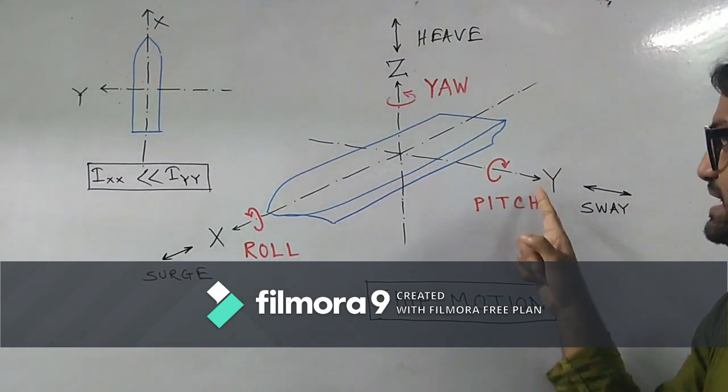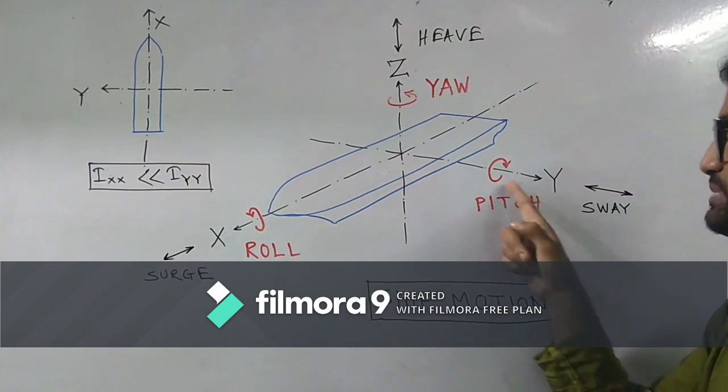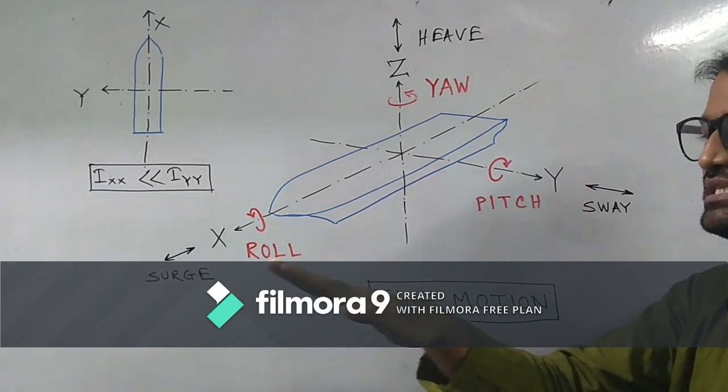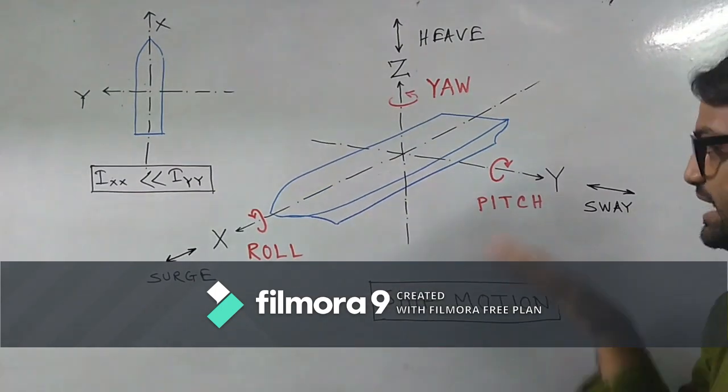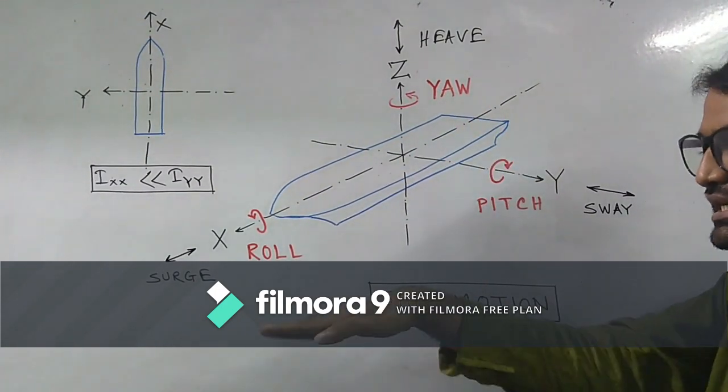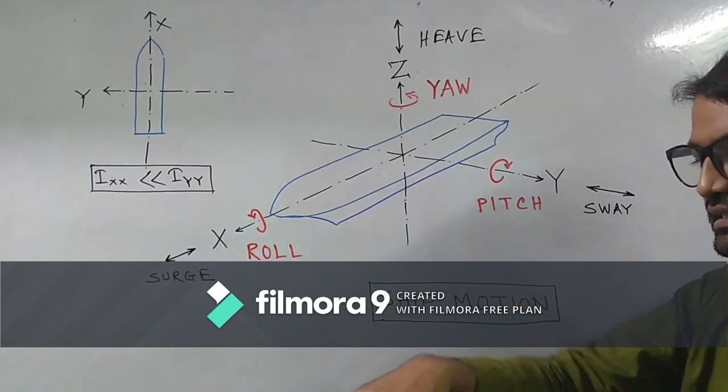What is this? This is pitch or the event is called pitching. This pitch is about y-axis. If the ship wants to rotate like this, this kind of motion is actually pitching, and yaw or yawing. This event is basically about the vertical axis.